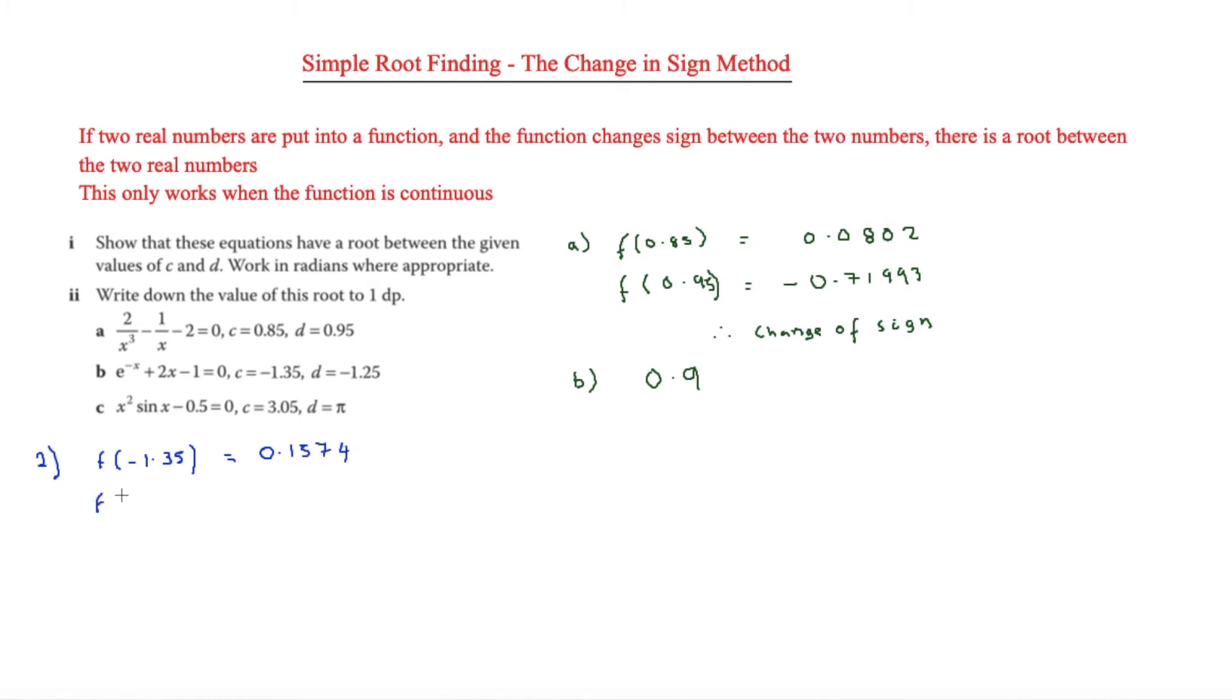f of minus 1.25 is going to equal minus 0.00966. In part B of this one, we know it's going to be minus 1.3 as that is what we can get from it being one decimal place.